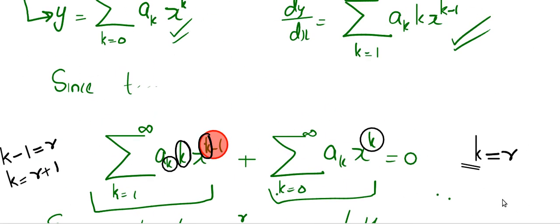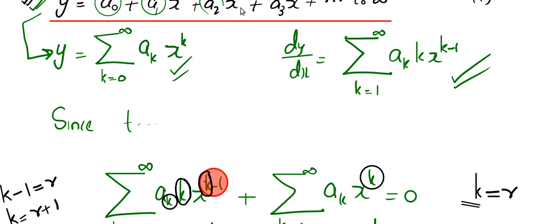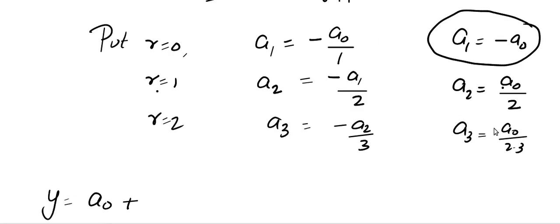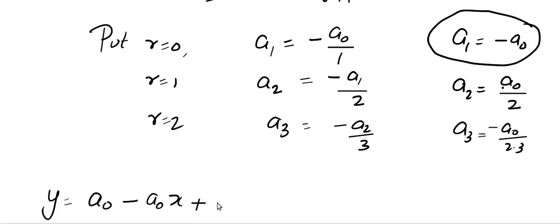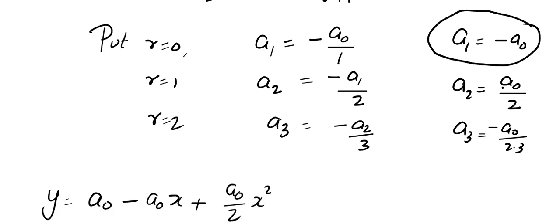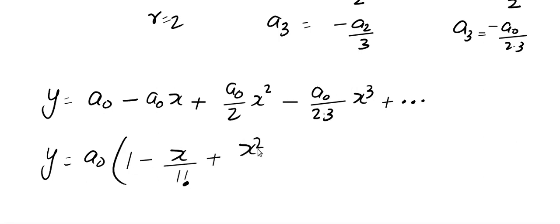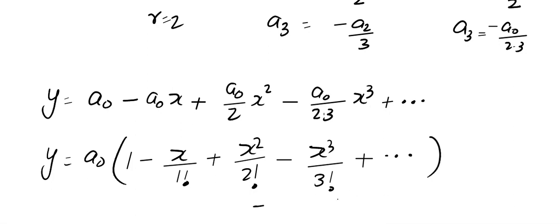That will be more than enough. We will plug in all these values for a1, a2, a3, etc., because we assumed that to be our answer. So y equals a0 plus a1 times x — and a1 is minus a0 — so it is going to be minus a0 times x. Plus a2 times x square, which is a0 by 2 times x square. Plus a3 times x cube, which is a0 by (2 times 3) times x cube, plus etc. And that gives me the answer: a0 times the quantity 1 minus x by 1 factorial plus x square by 2 factorial minus x cube by 3 factorial plus etc. That's it.